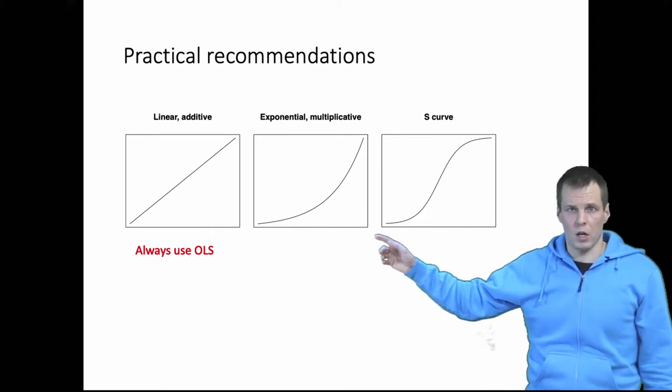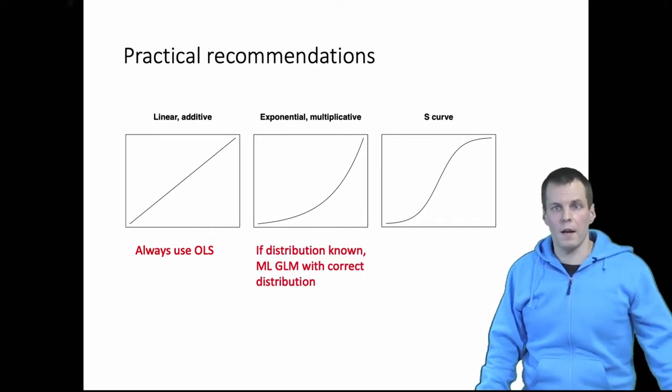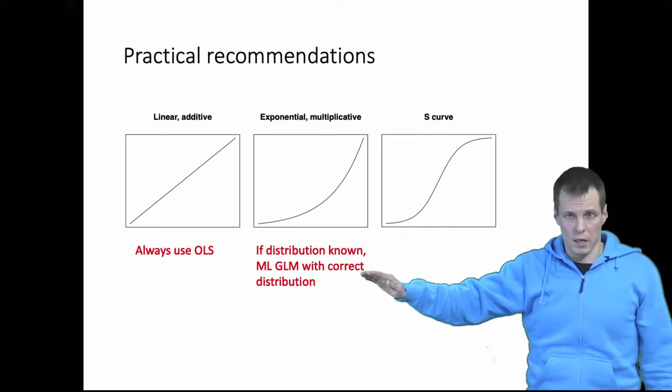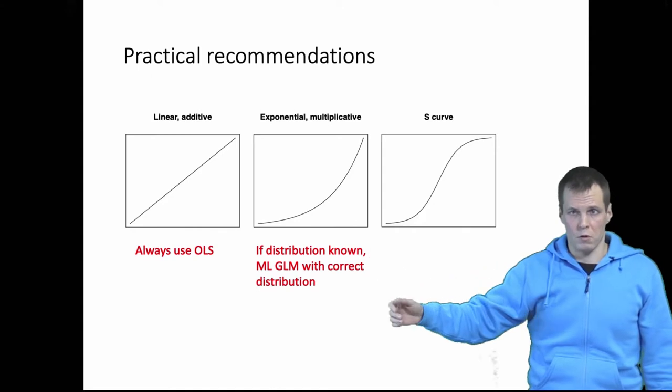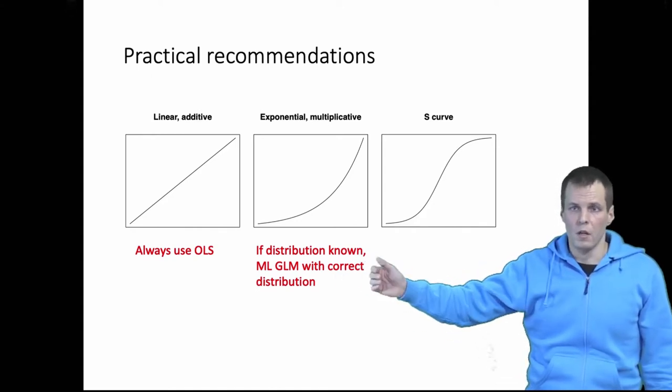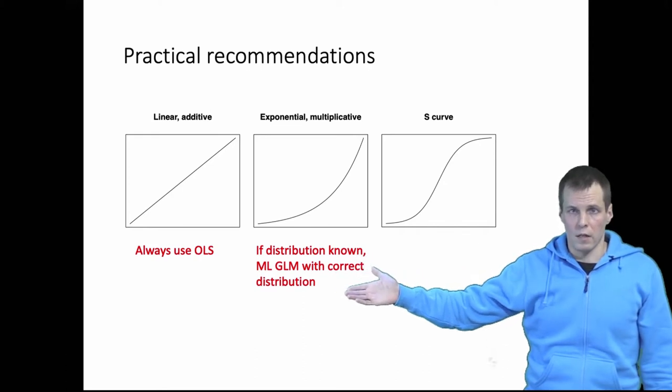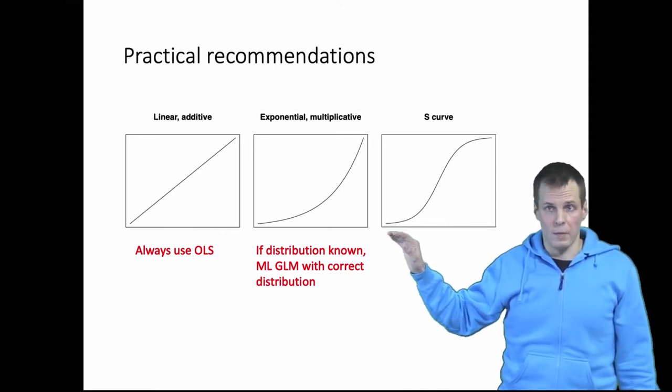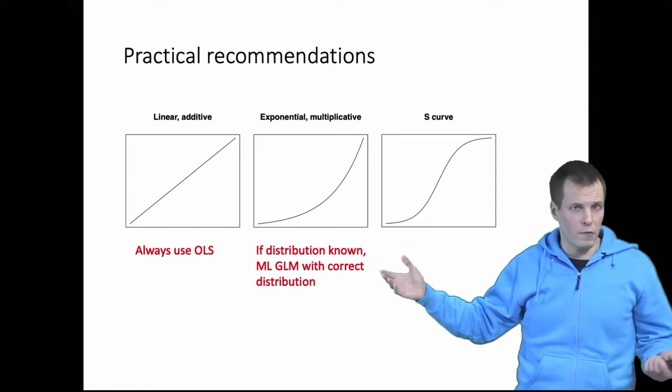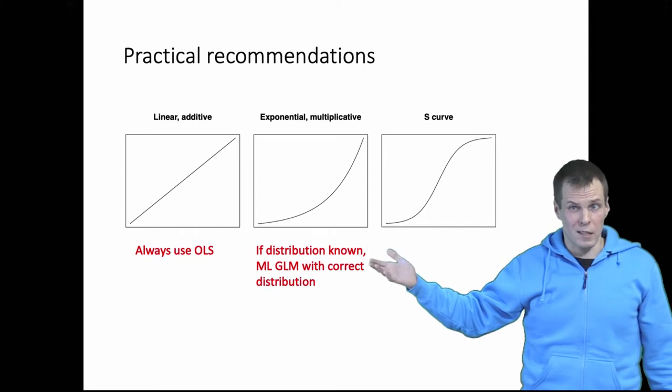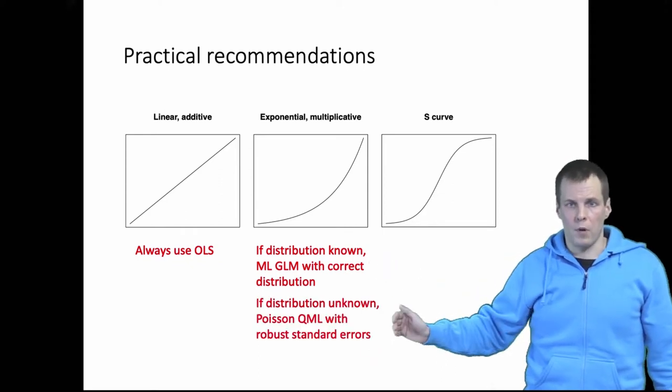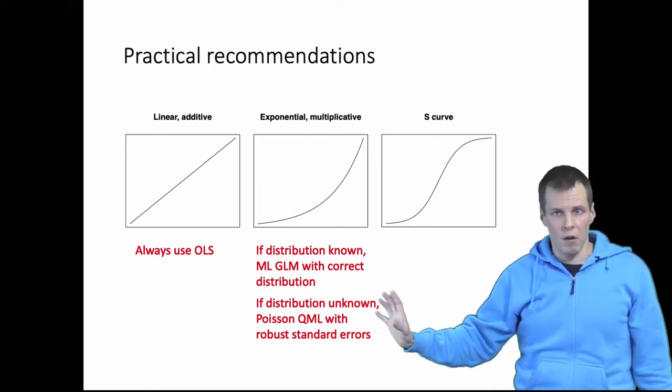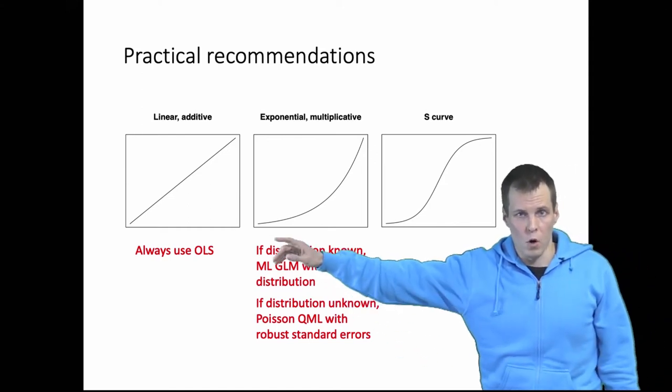If you have exponential model with multiplicative relationships then if you know the distribution of the dependent variable given the fitted values then use the maximum likelihood estimation of the generalized linear model with the correct distribution. So if you know that it's Poisson, you know it's negative binomial, you know that it's something else then apply the normal GLM. If you don't know what the distribution is or you're uncertain about the distribution of the dependent variable or you know that it doesn't follow any of the distributions that your statistical software supports then apply Poisson quasi maximum likelihood estimation with robust standard errors. So this is a similarly safe choice as using OLS for the linear model.